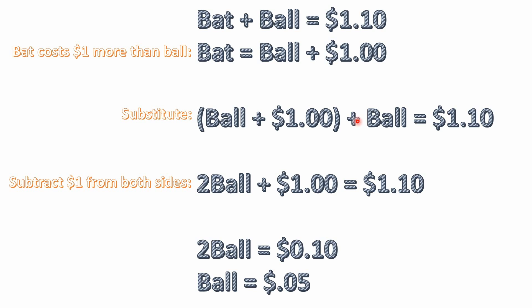You can treat this just like an algebra problem. If we know that ball plus $1.00 is the same thing as bat, we can go back and substitute. We know bat plus ball equals $1.10, so we replace the variable 'bat' with ball plus $1.00. Now the equation has just one variable — just 'ball' — and we solve for what ball equals.